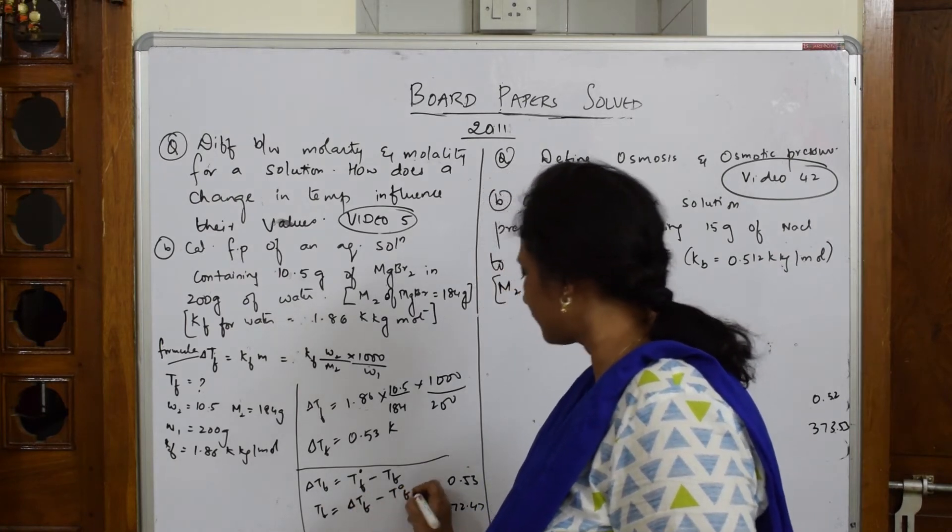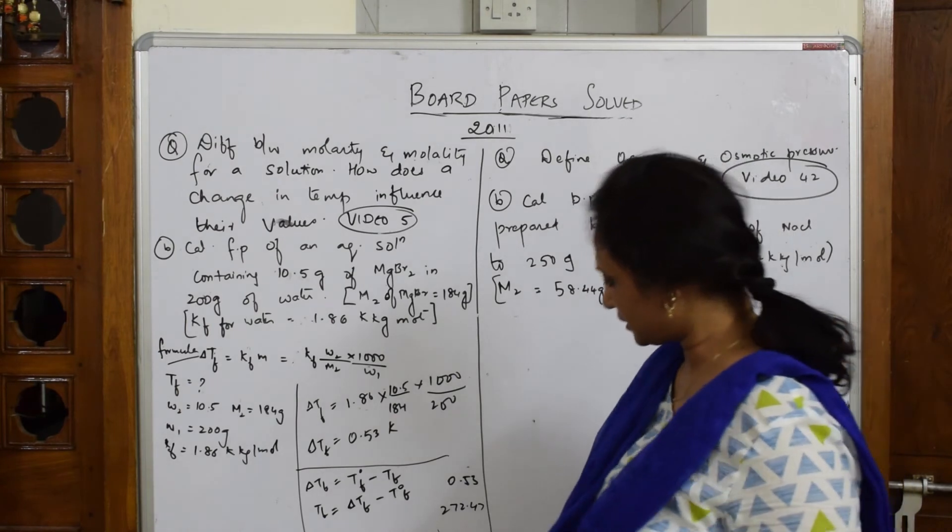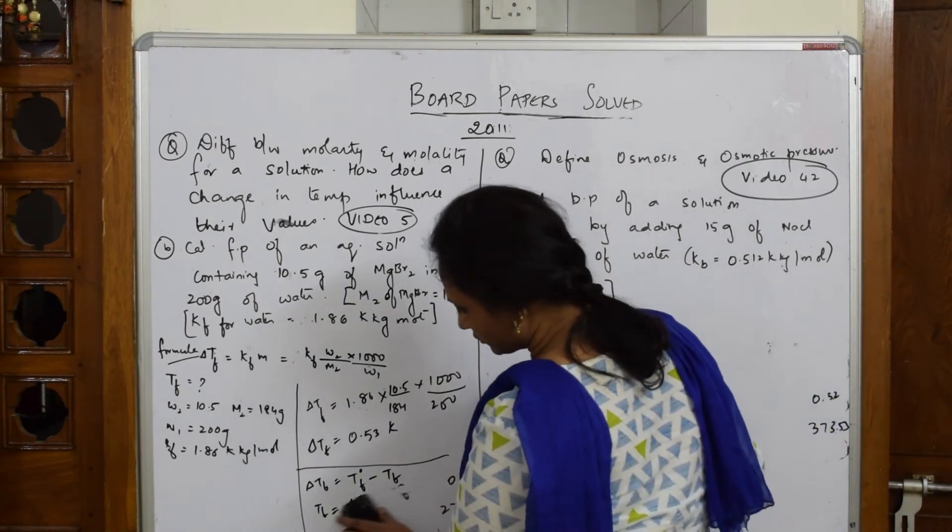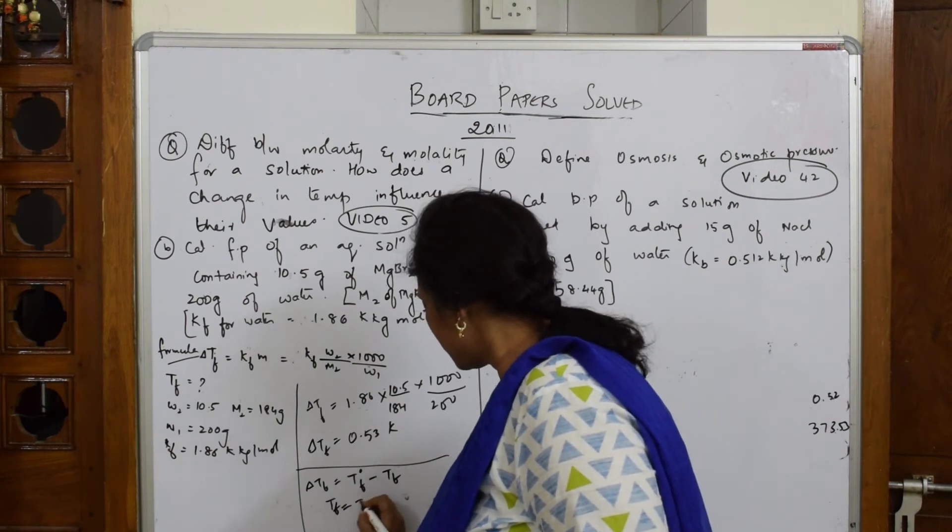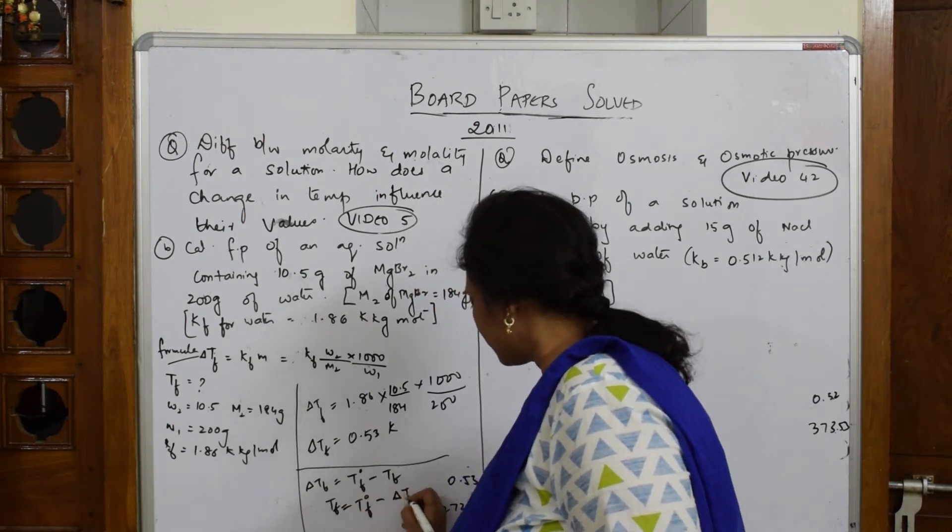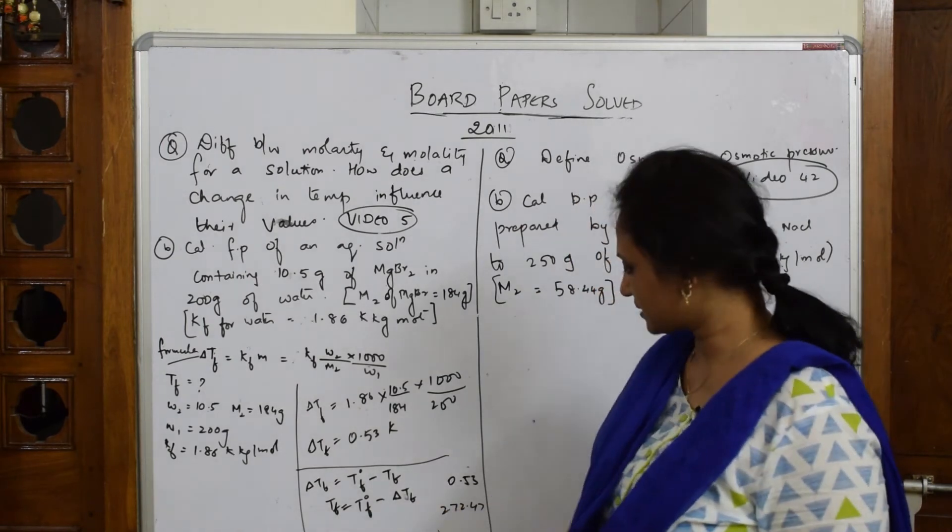Let me substitute. We want TF. TF equals T naught F minus delta TF. This is correct.